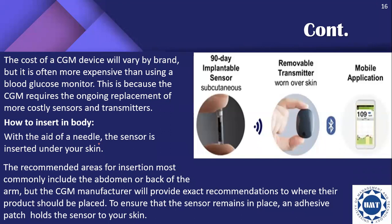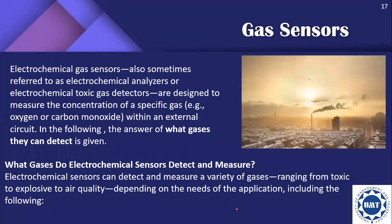To insert a CGM, the sensor is inserted under your skin with the edge of a needle. The recommended areas for insertion most commonly include the abdomen or back of the arm. An adhesive patch holds the sensor to your skin to ensure it remains in place.